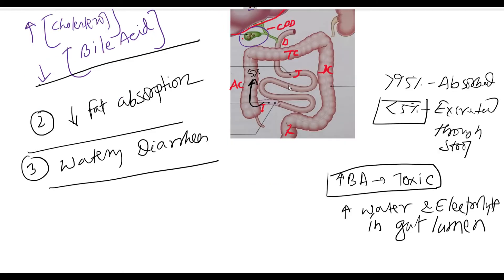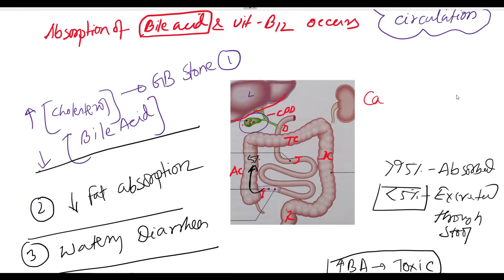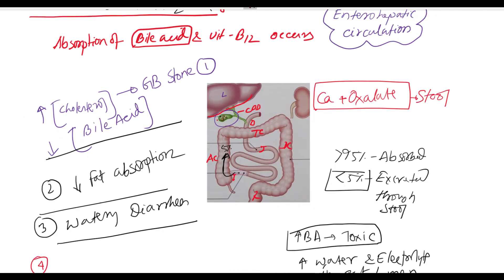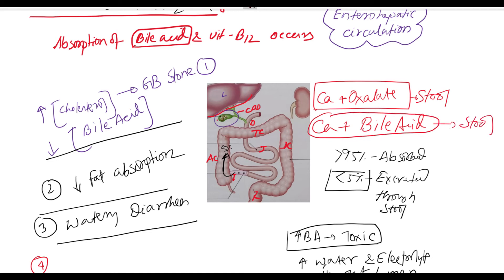Consequence number four — look again at the diagram. In the large gut, calcium normally binds with oxalate and forms calcium oxalate salt, which passes through the stool. But when there is a high amount of bile acid present in the large gut, the calcium will bind with the bile acid or bile salt instead, and the calcium-bile acid complex passes through the stool. In that case, the oxalate will remain free inside the gut lumen.